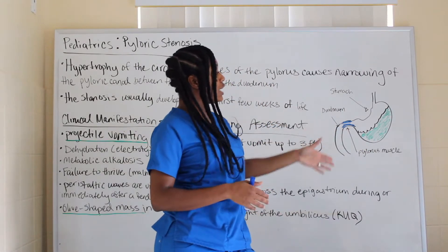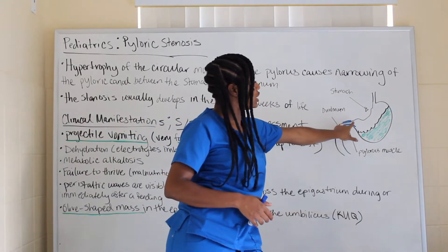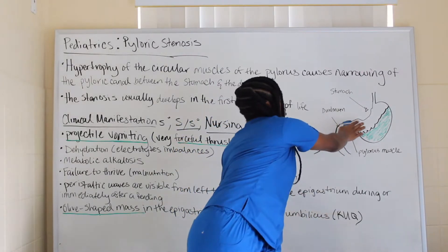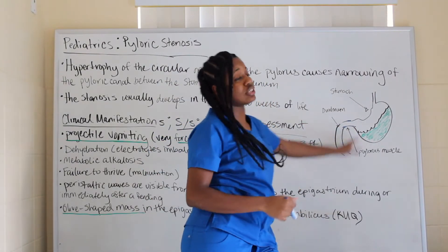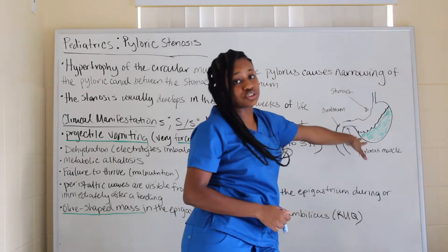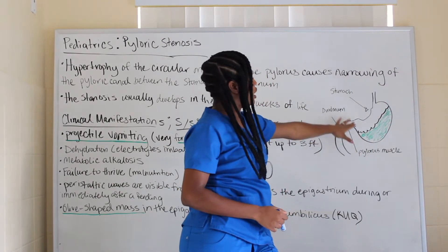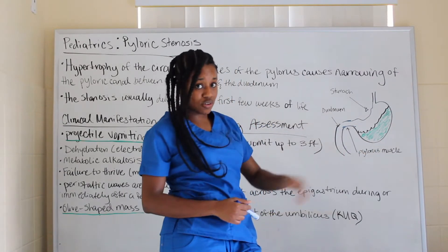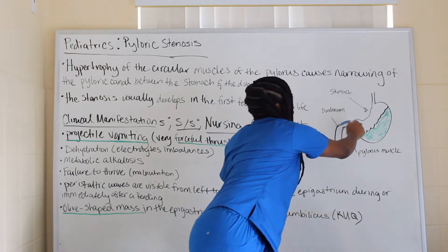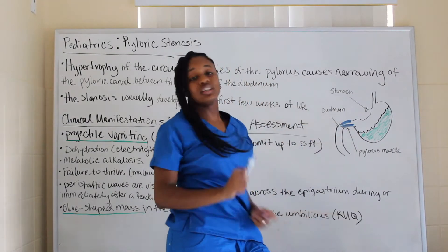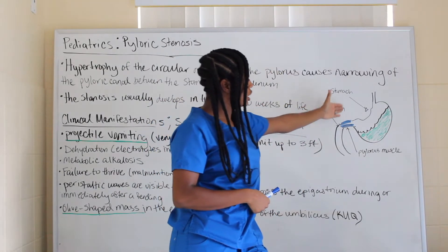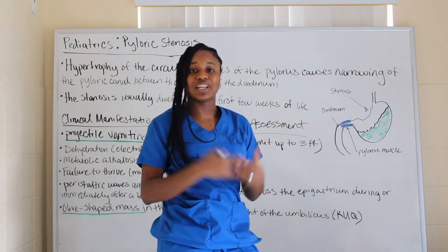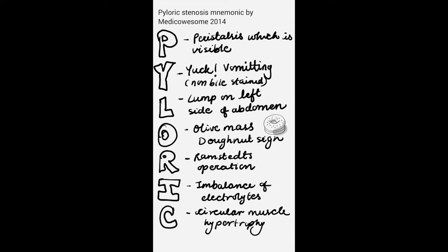In a normal stomach there isn't a narrowing, so you eat your food, it gets digested in the stomach, and then it makes its way down the GI tract. With pyloric stenosis, that access isn't there. The stenosis is happening in the pyloric area, hence the name pyloric stenosis — try to break down the medical term to find the definition.